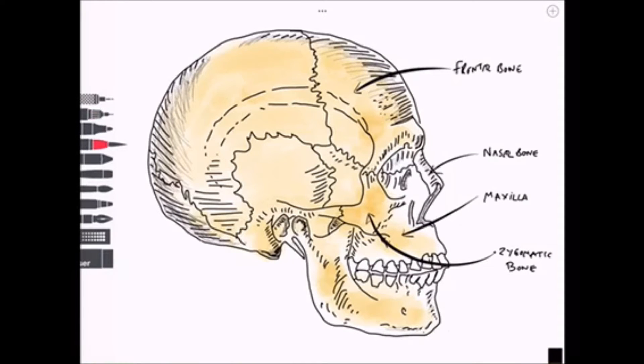Moving posteriorly we have the occipital bone and beneath there would be the occipital lobes of the brain. Laterally we have the temporal bone. This is actually the squamous part of the temporal bone. Superiorly we have the parietal bone and there would be the parietal lobes of the brain beneath there.